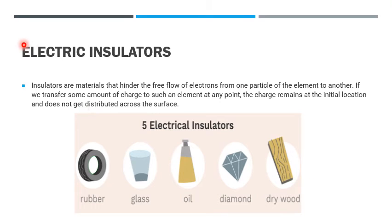Electric insulator. Insulators are materials that hinder the free flow of electrons from one particle of the element to another. If we transfer some amount of charge to such an element at any point, the charge remains at the initial location and does not get distributed across the surface. Five electrical insulators are rubber, glass, oil, diamond, dry wood, etc.